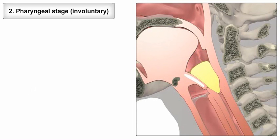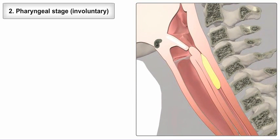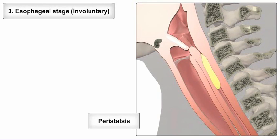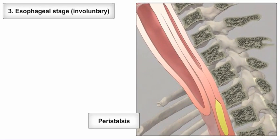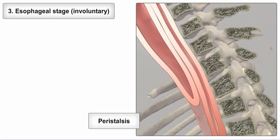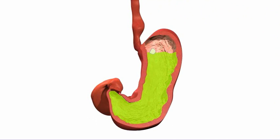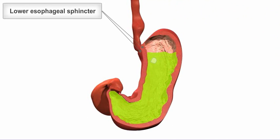into the esophagus and contracts to reduce backflow into the pharynx. In the final esophageal stage, the bolus is pushed onward by peristalsis, a progression of involuntary wave-like contractions of the circular and longitudinal smooth muscles of the esophagus. As the bolus approaches the end of the esophagus, the lower esophageal sphincter relaxes and the bolus moves into the stomach.